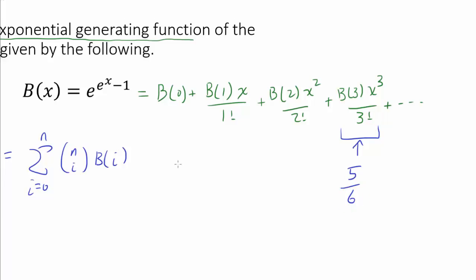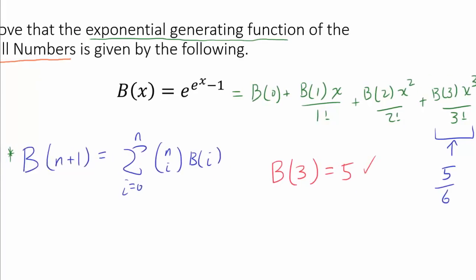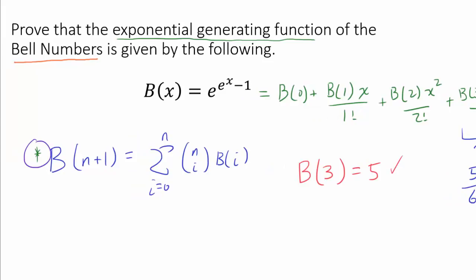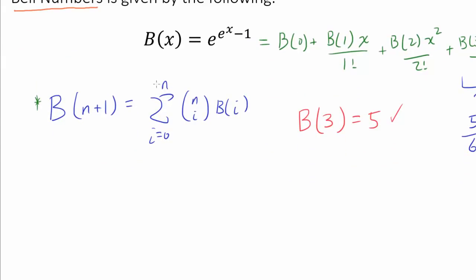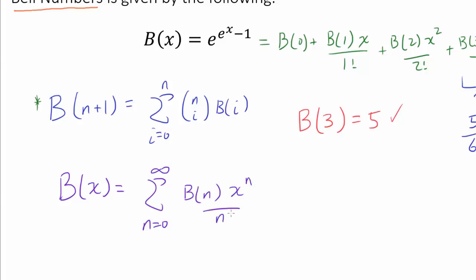In the last video we verified that b(3) is 5, so it looks like this formula is actually working. To prove it, we are going to use the recurrence relation derived in the last video. We want to show that b(x), defined as the summation from n equals 0 to infinity of b(n)·x to the n over n factorial, is equal to e to the e to the x minus 1.